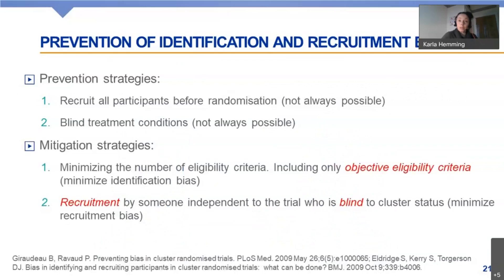There are ways to prevent this type of bias. The first way is to recruit all participants before randomization — not always possible. We can blind the treatment conditions — again, not always possible. If these prevention strategies won't work in your setting, then perhaps it might be questionable whether a cluster randomized design is the right choice. But if you do use a cluster randomized trial, there are mitigation strategies: minimize the number of eligibility criteria, include only objective eligibility criteria, and recruit, if at all possible, by somebody who is blind to the cluster status.